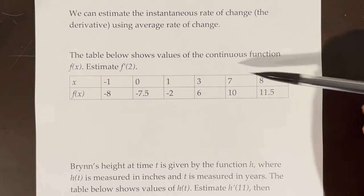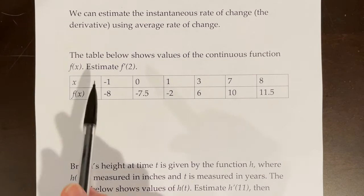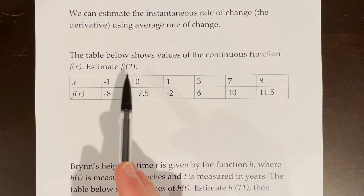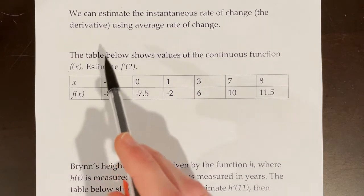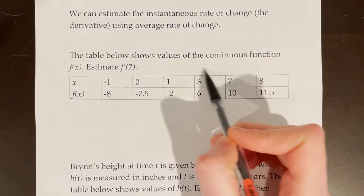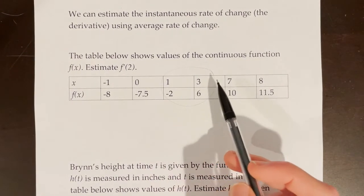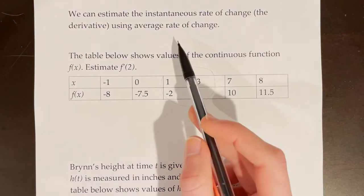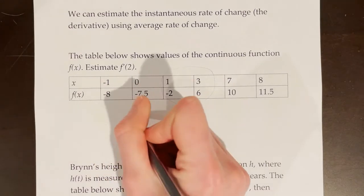But what we do have is a table, and it's only asking us to estimate. To estimate the instantaneous rate of change, or estimating the derivative, we can use the average rate of change. So in order to estimate f prime of 2, I'm going to find the slope between these two points, because 1 and 3 are very close to 2. And since the function is continuous, we can use the average rate of change to estimate the instantaneous rate of change.